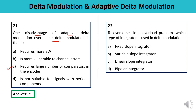Question 22 (last): To overcome the slope overload problem, which type of integrator is used in Delta Modulation — fixed slope integrator, variable slope integrator, linear slope integrator, or bipolar integrator? A variable slope integrator is required because it changes the step size according to the variation and nature of the modulating signal. Since it is capable of changing the step size, a variable slope integrator is required. So the answer is B.